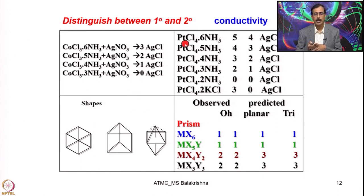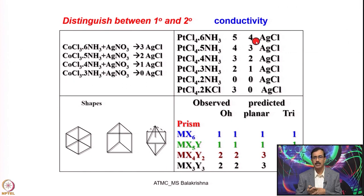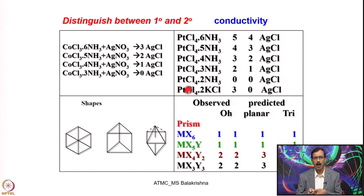Werner then did similar work with platinum compounds. He made a platinum compound and could get 4 equivalents of silver chloride coming out, and in another compound he got 3 equivalents. He went on making all these compounds. In the case of tetrachloroplatinate, there are no ammonia ligands — all chlorides are secondary valency and it is a square planar complex. When treated with silver nitrate there was no precipitation, leaving him with a dilemma of establishing either tetrahedral or square planar geometry.